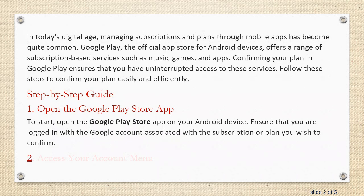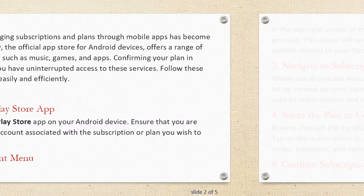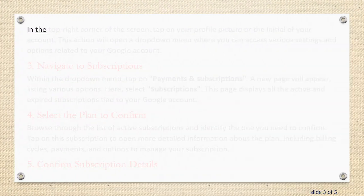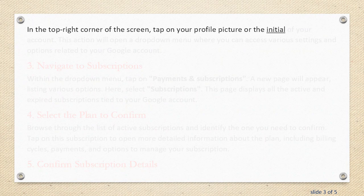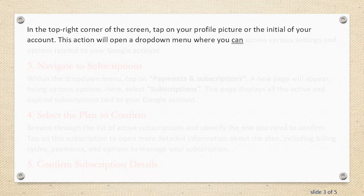Step 2: Access your account menu. In the top right corner of the screen, tap on your profile picture or the initial of your account. This action will open a drop-down menu where you can access various settings and options related to your Google account.